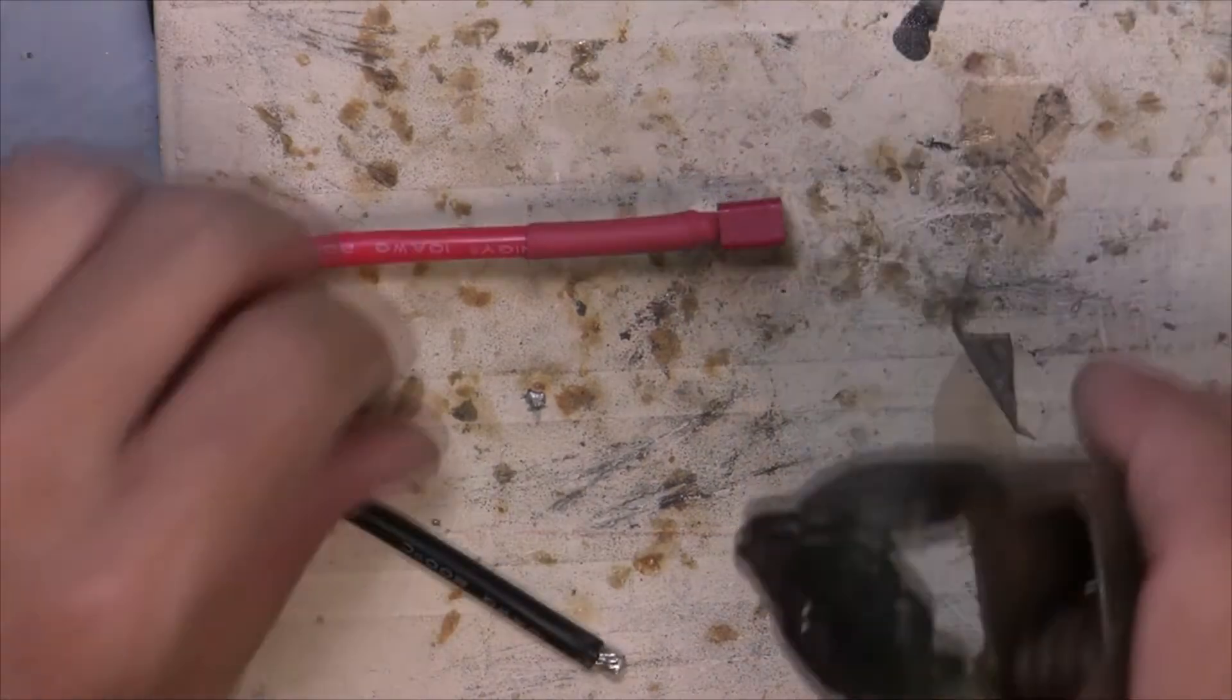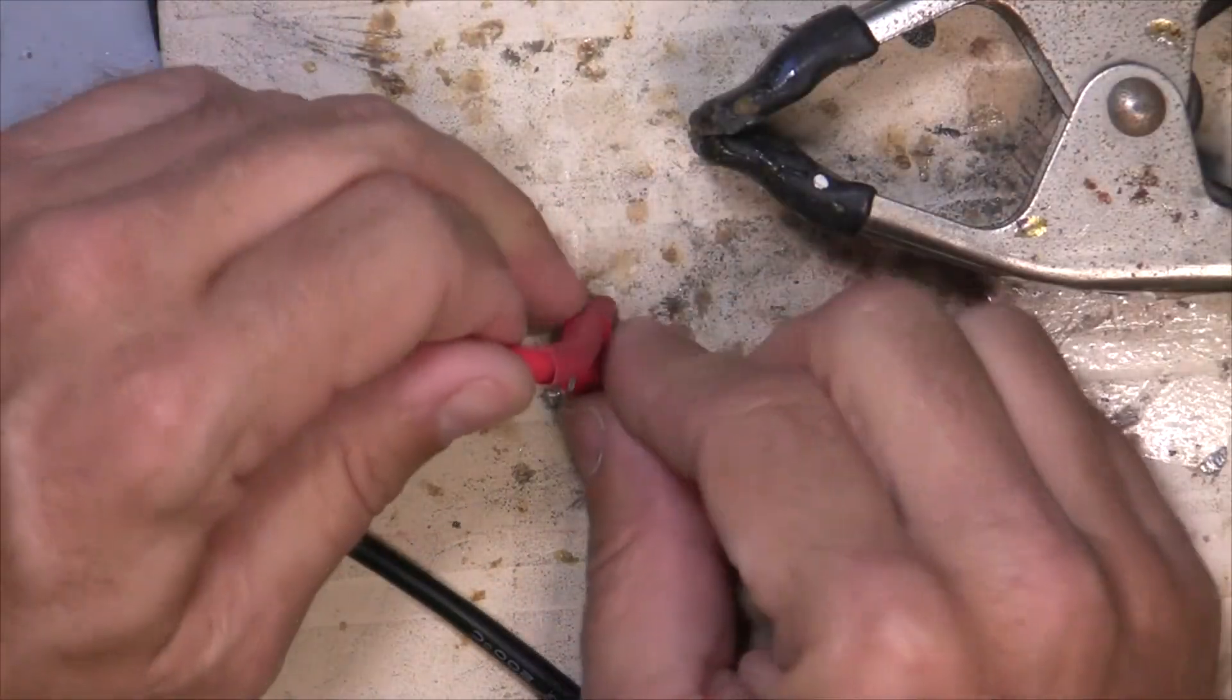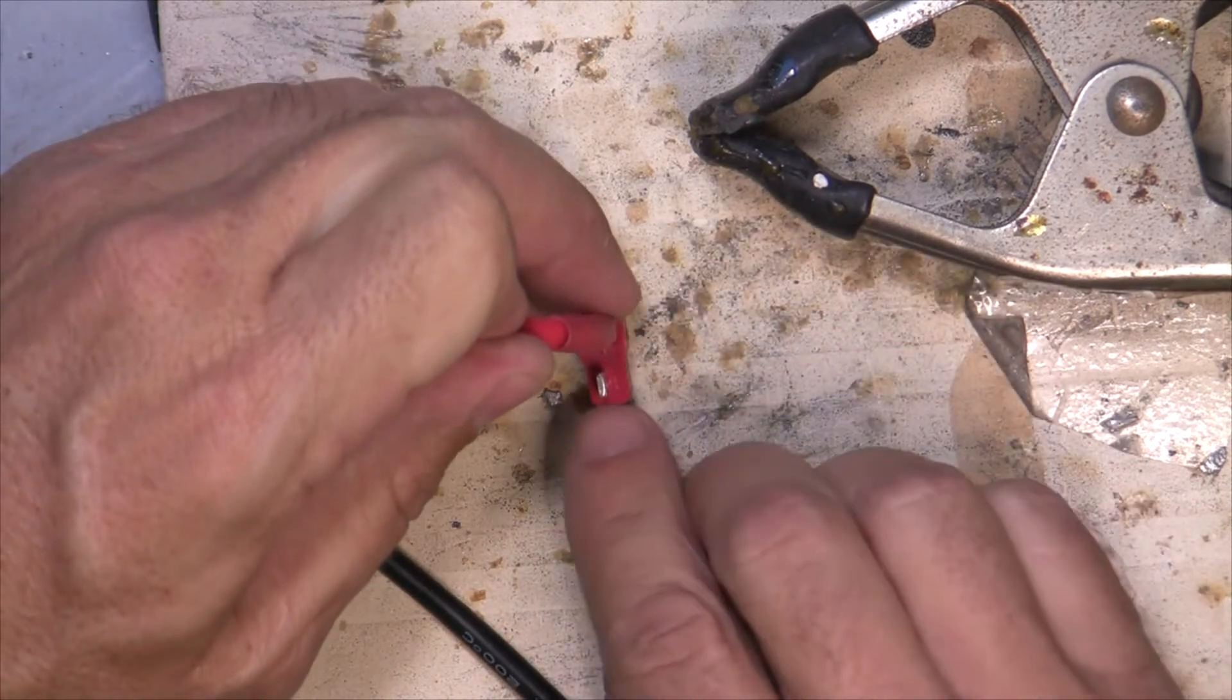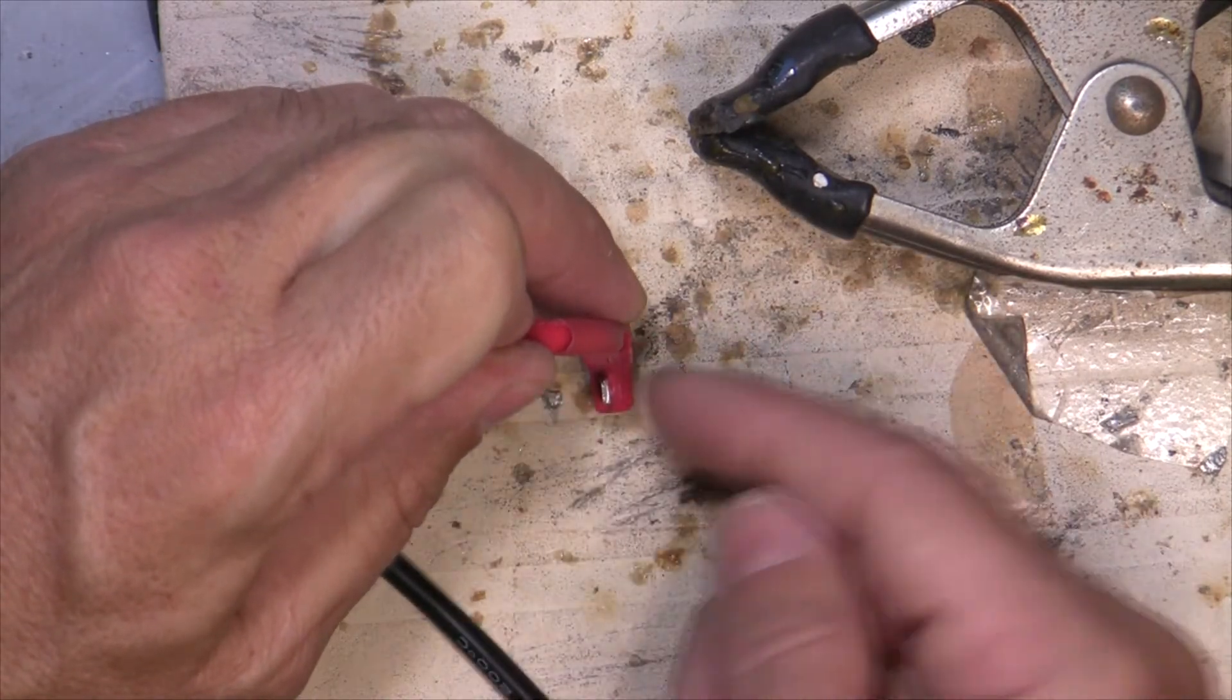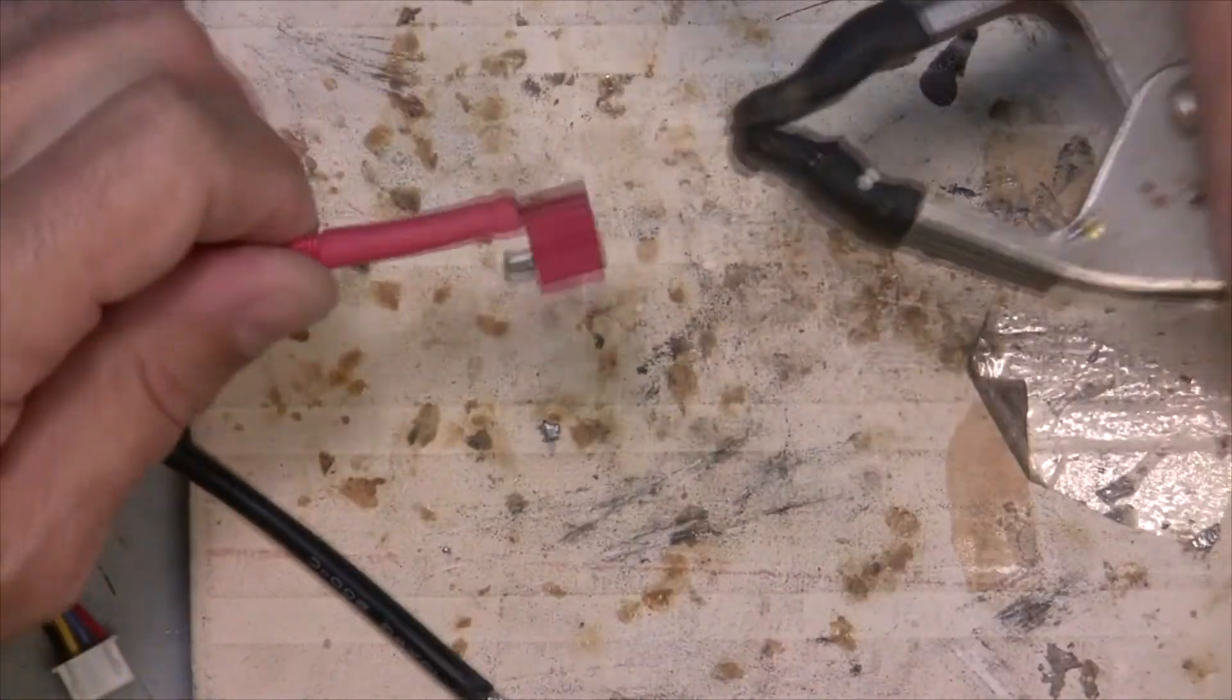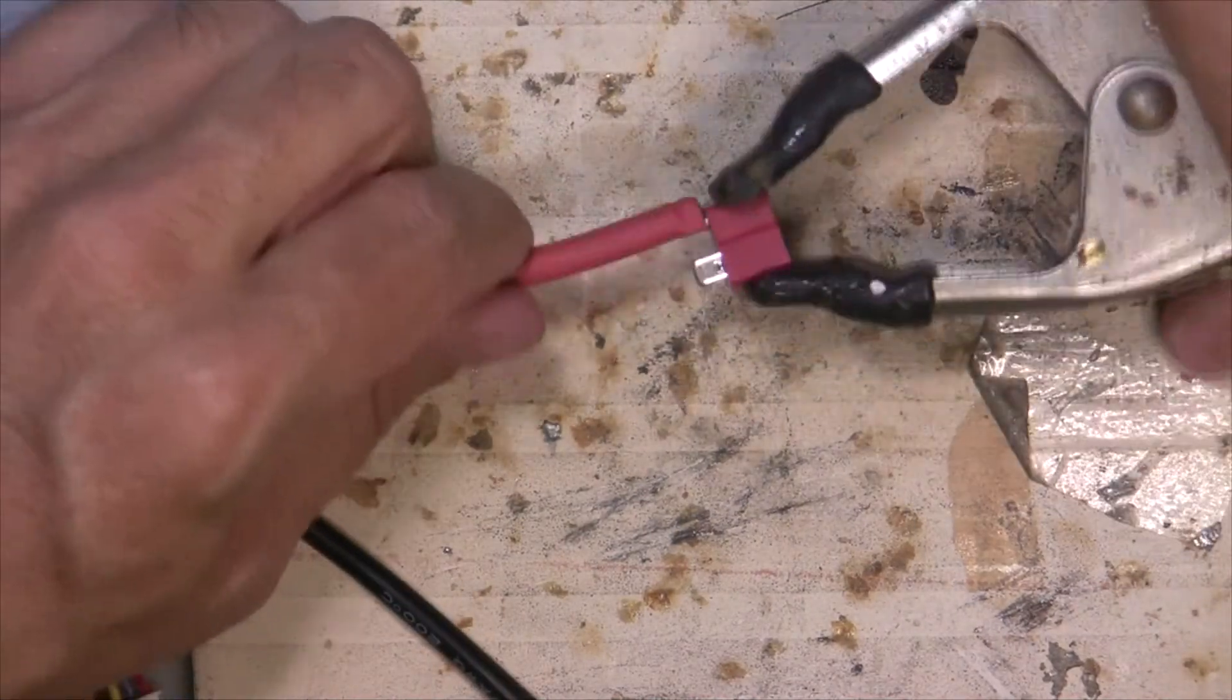Okay, so there's the positive. Let's do the negative. So again, we're going to clamp this so that you can see that the Dean's connector has more room on one side. So don't do it to this side, do it to this side where the negative is. Just clamp it in your connector there.